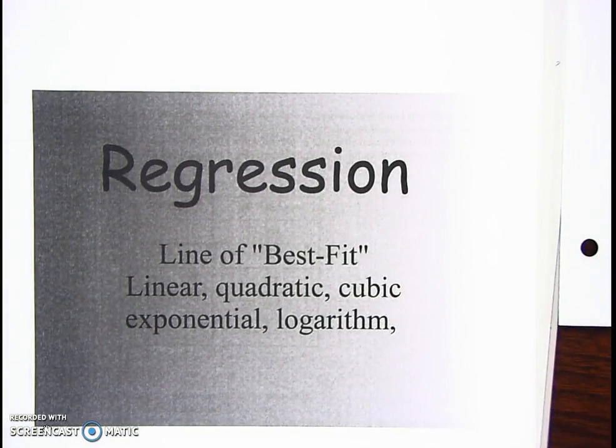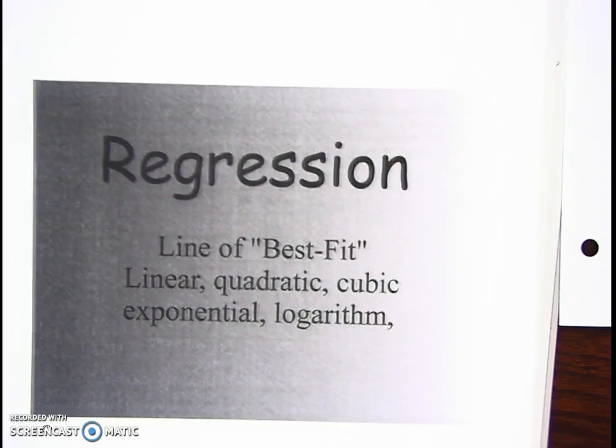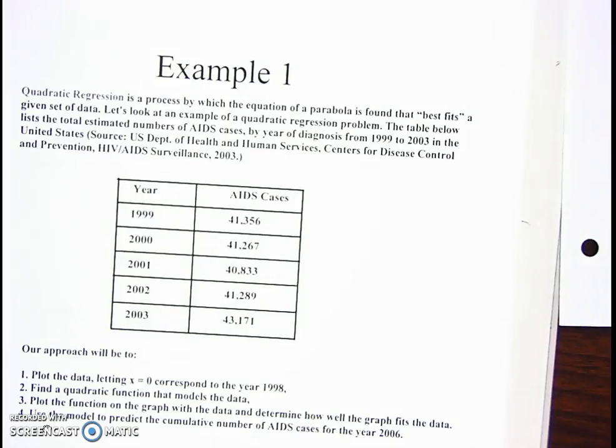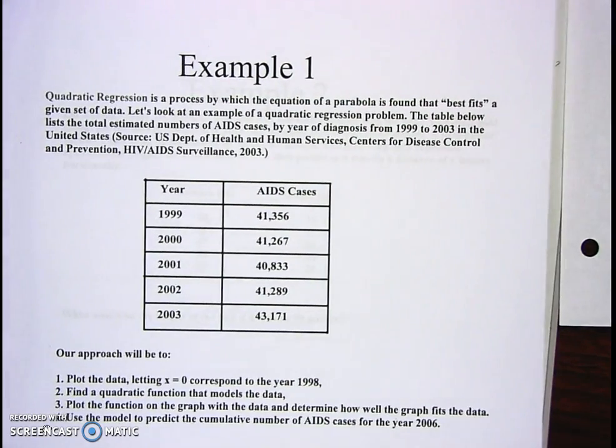The great thing about regression is they give you information from the past and you can predict what's going to happen in the future. That's what this whole regression thing is really about - taking the information you have and predicting the future. We come to Example 1 and everybody should have a packet with all this.